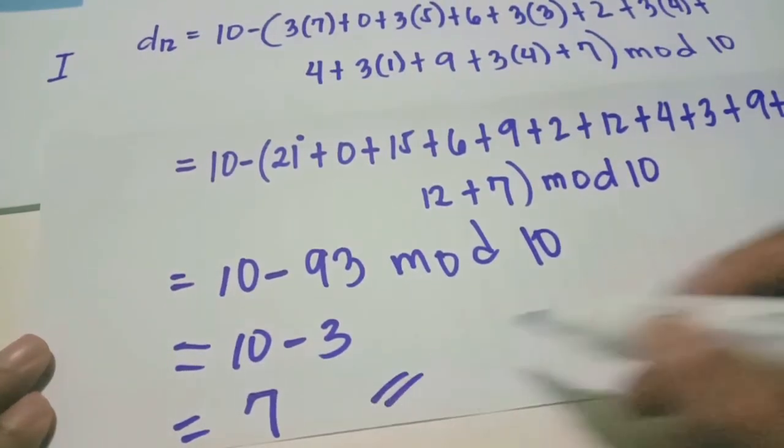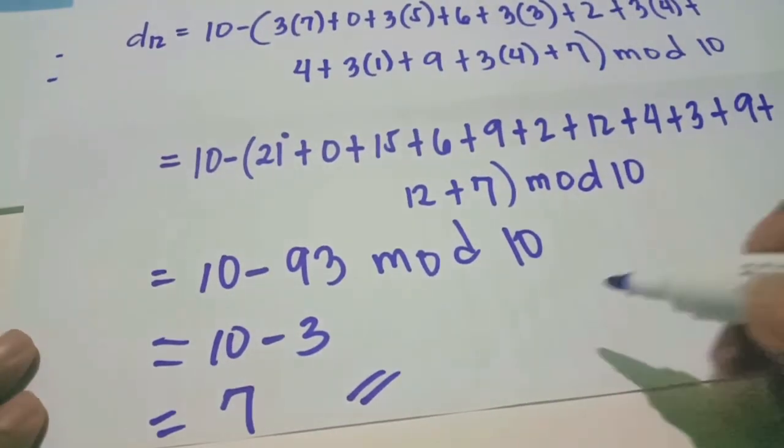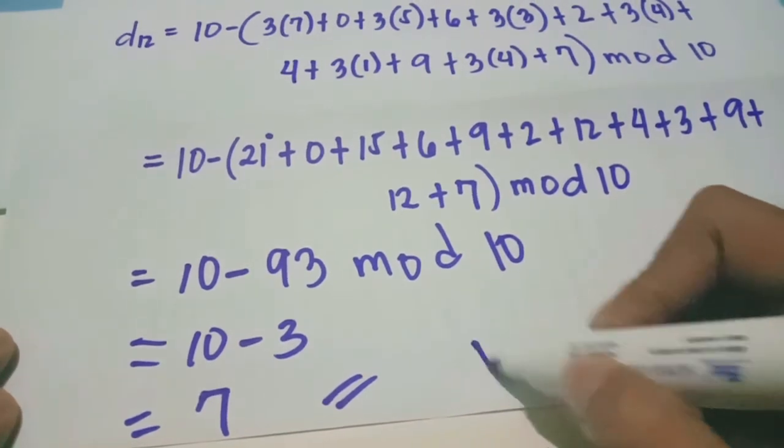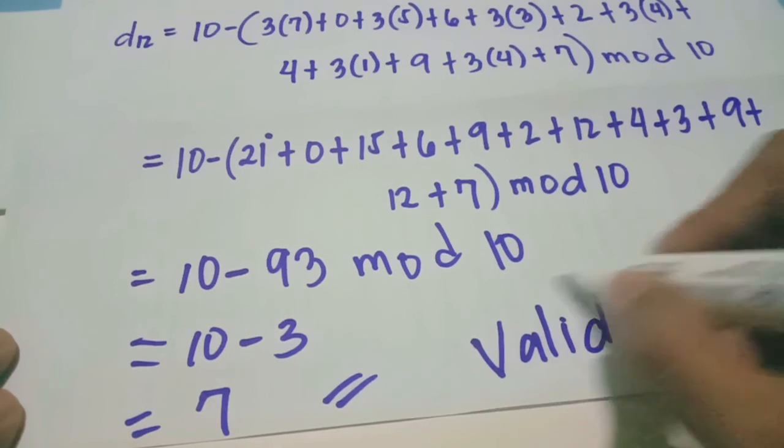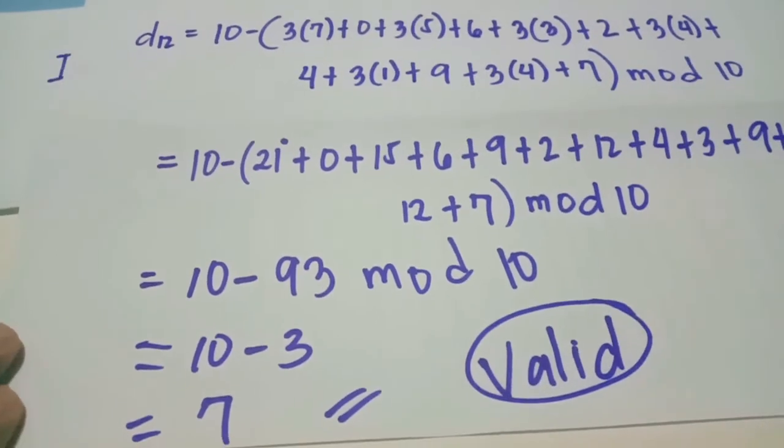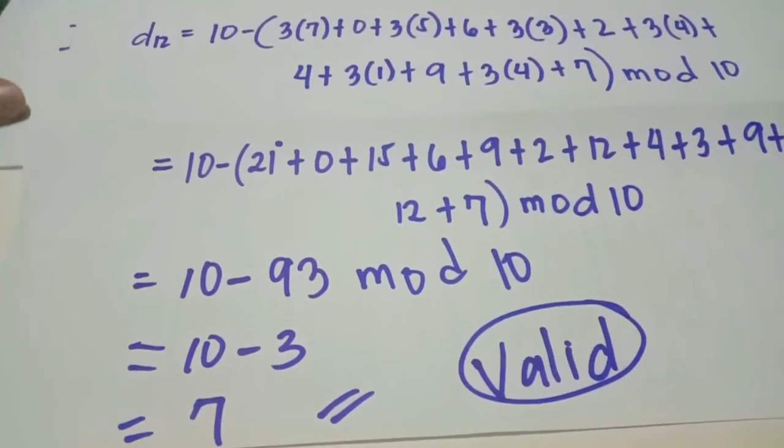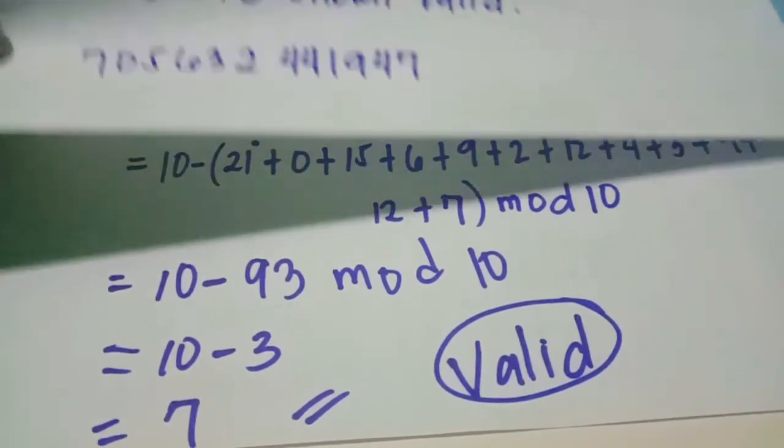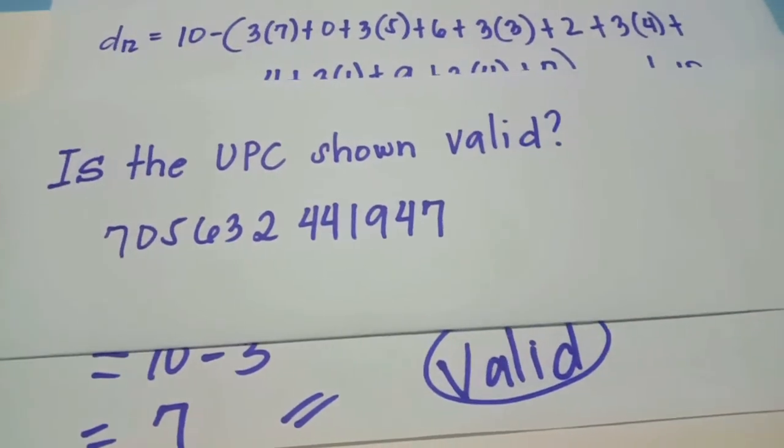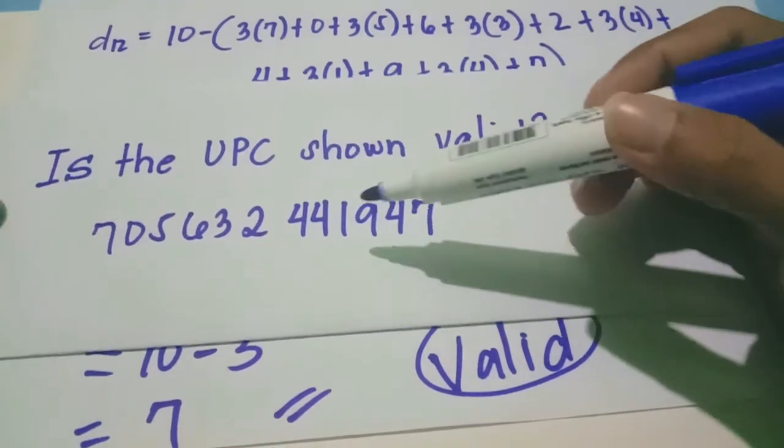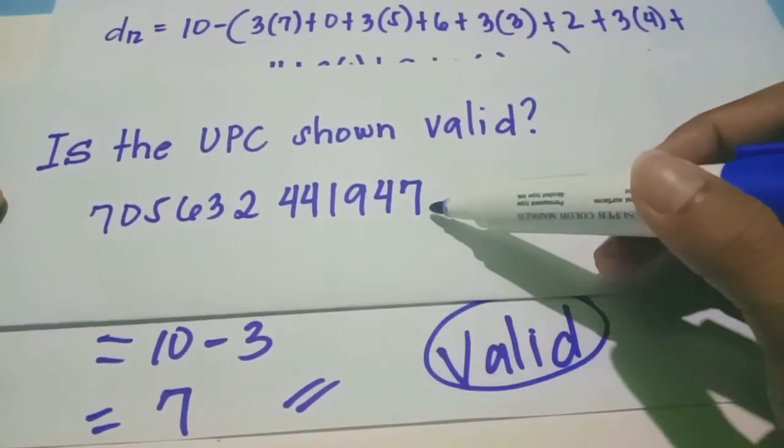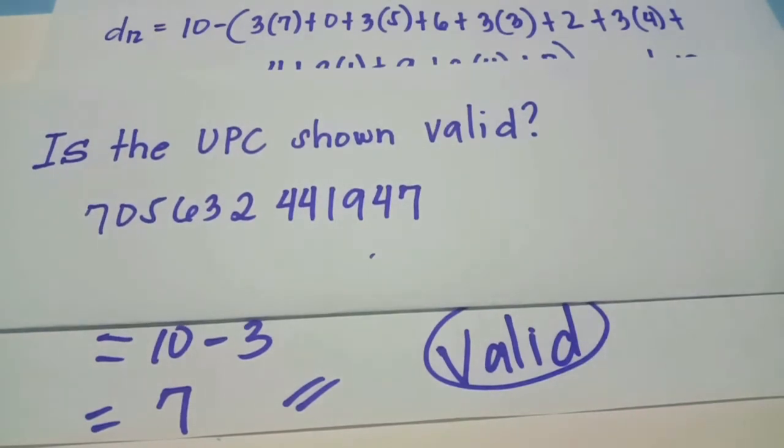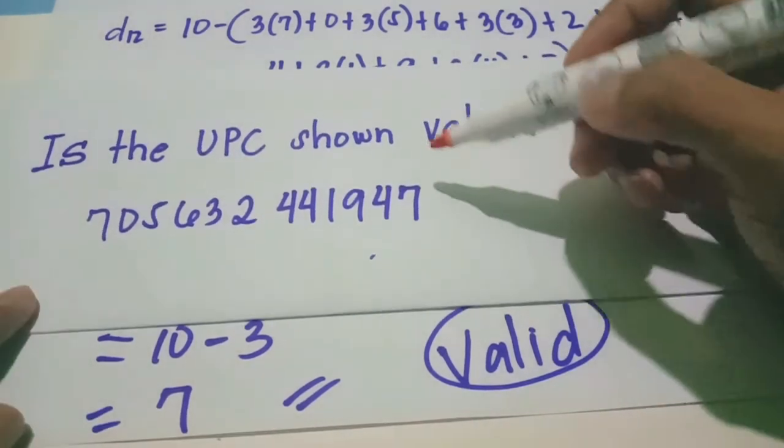So 7. Therefore the UPC code is valid. It's valid because why? Because the value of the code is the same, that's 7. Therefore the UPC code is valid.